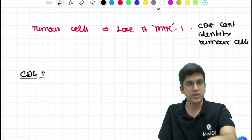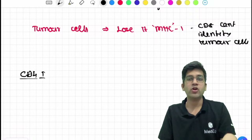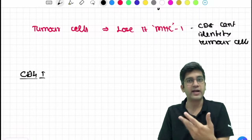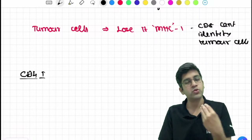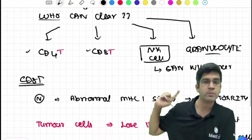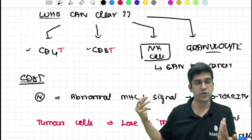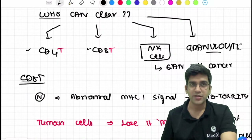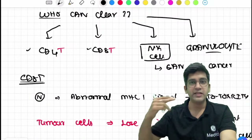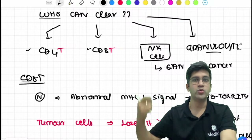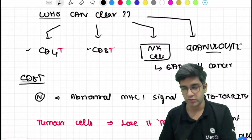Since tumor cells lose their MHC1, my body cannot identify them at all - my CD8 cannot identify them at all. So one arm of whatever can protect me is taken care of, just by losing MHC1. Maybe tumor cells learn from the damage and slowly lose their MHC1 molecule.